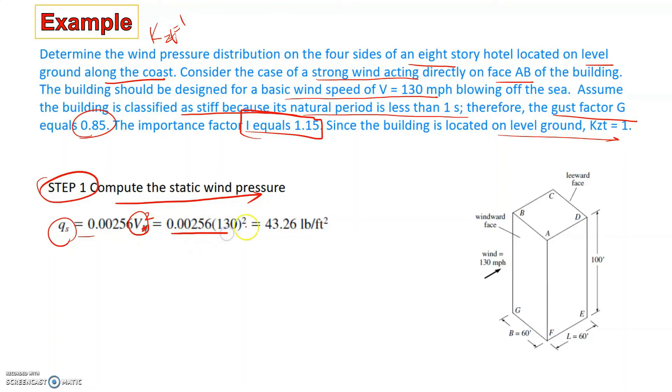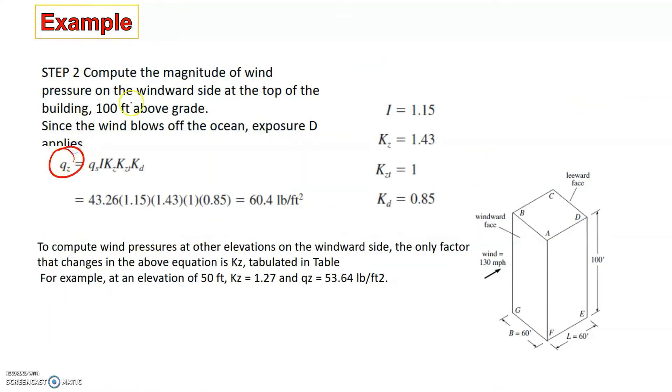Which is 0.00256 times 130 squared, which is 43.26. The next quantity that we need to calculate is Qz. To calculate Qz, you need to multiply Qs with some constants, which are I, KZ, KZT, and KD. I is the importance factor, which is 1.15. KZT is equal to 1, and KD is 0.85. This is all given to us. The KZ depends upon the height of the structure.